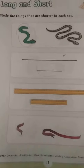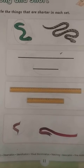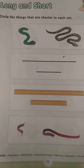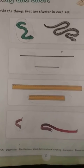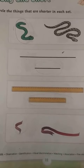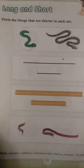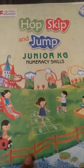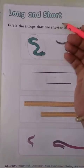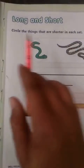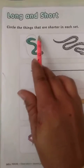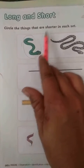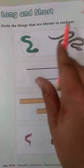For more explanation of long and short, children, take out page number 11 from your book Junior KG Numeracy Skills. Long and short — circle the things that are shorter in each set.